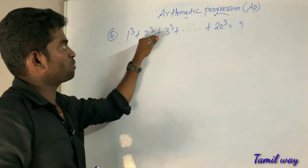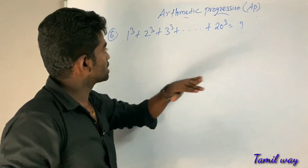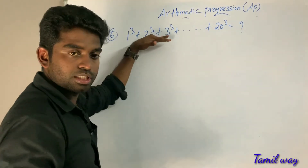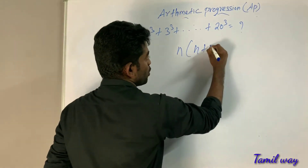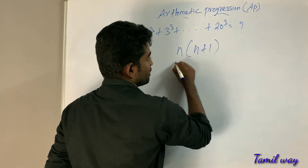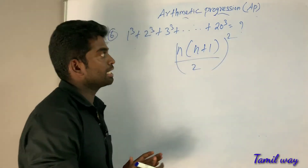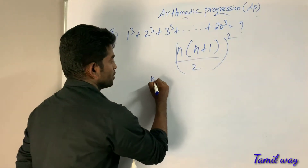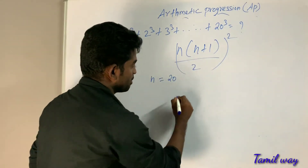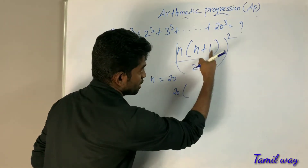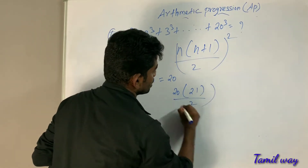Sixth sum: 1 cube + 2 cube + 3 cube + ... up to 20 cube. For cubes, the formula is [N(N+1)/2] whole squared. N equals 20. Substitute: 20 into 21, divided by 2, the whole square. Cancel 2: 10 into 21 equals 210, the whole square.